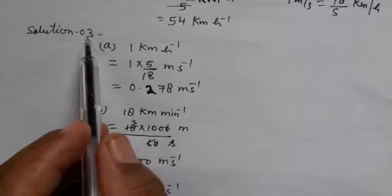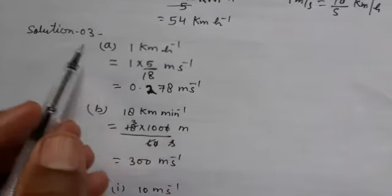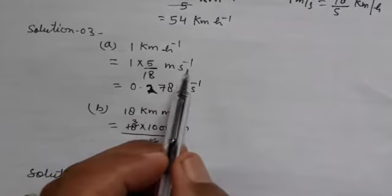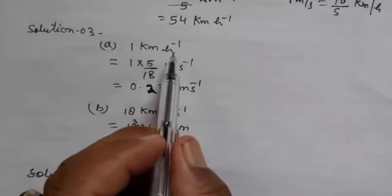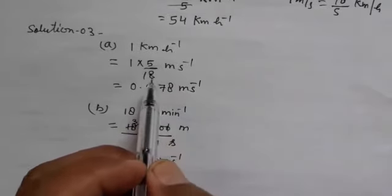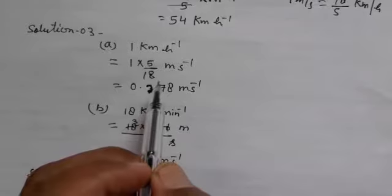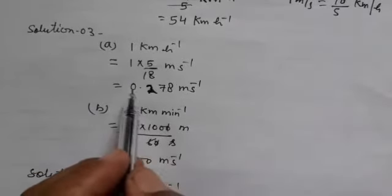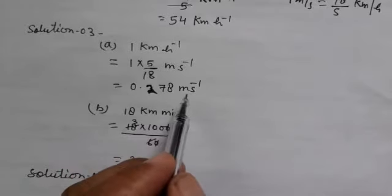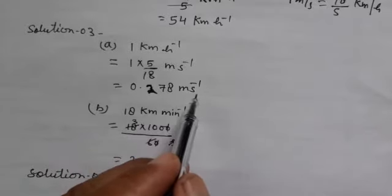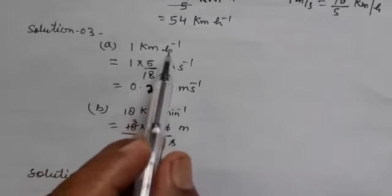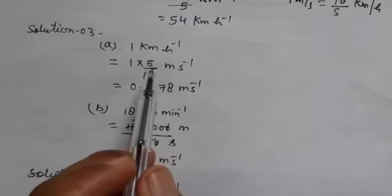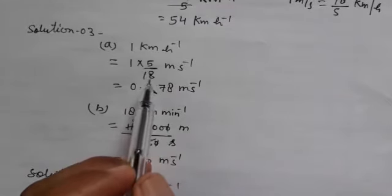First part of question number 3 solution: 1 km per hour, change to meter per second. We multiply by 5 by 18, giving 5 by 18 meter per second.